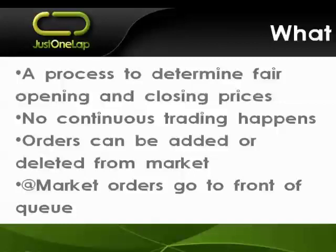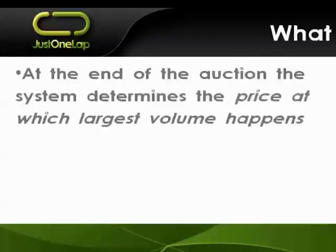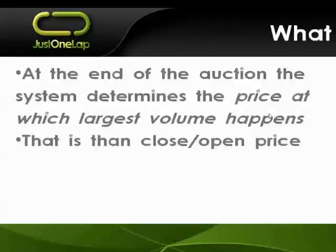Orders are going in during the auction — buyers and sellers all stacking up, no trading happening. Then at the end of that auction process, the system will automatically determine the price at which the largest volume happens. That is the crux of it: one, no trading happening; and two, it's that price at which the largest volume happens. That price is then set as the auction price, which would be either the close or the open for the day, depending on whether it's an opening or closing auction.